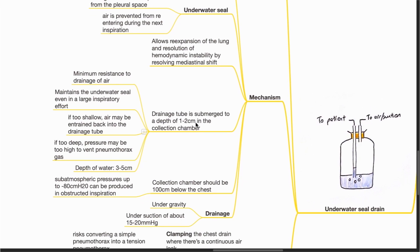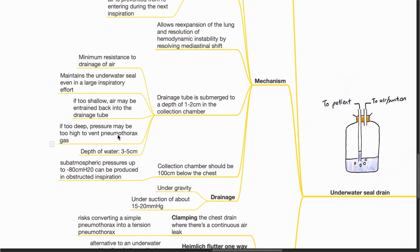The drainage tube is submerged to a depth of 1 to 2 cm in the collection chamber. This allows minimum resistance to drainage of air, maintains the underwater seal even in a large inspiratory effort. If too shallow, air may entrain back into the drainage tube. If too deep, pressure may be too high to vent out the pneumothorax gas.